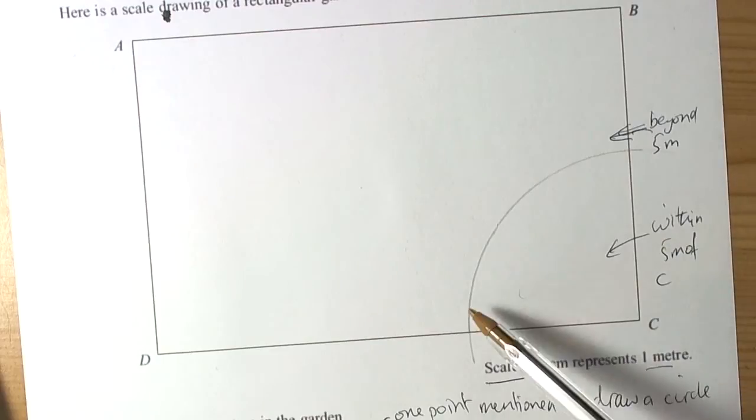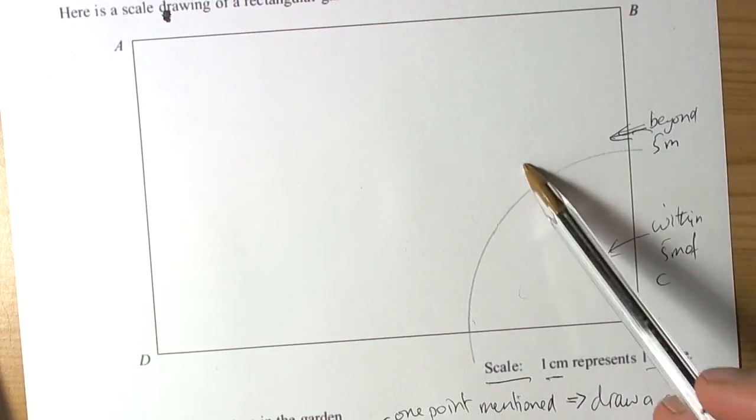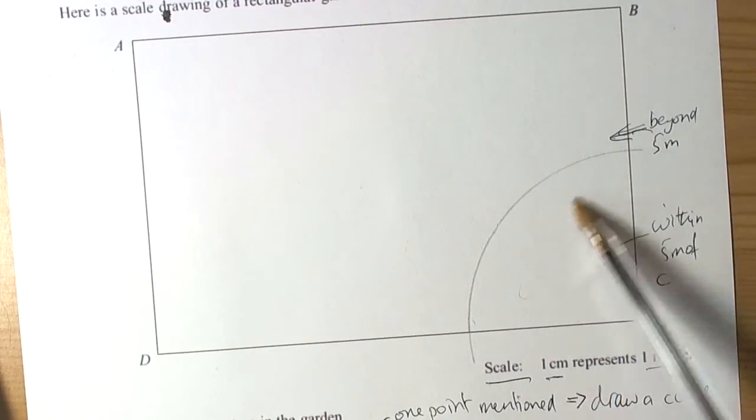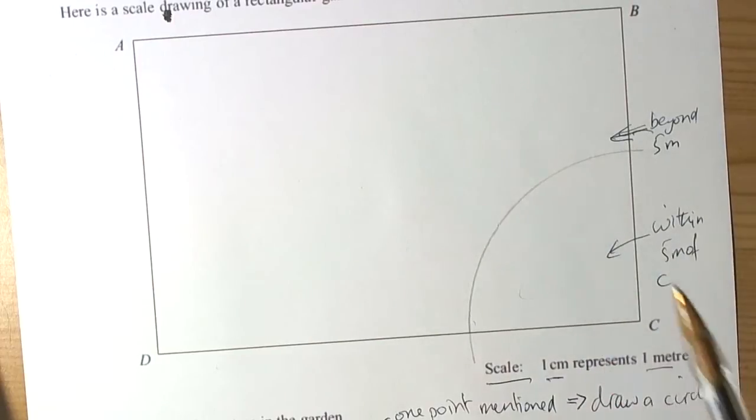That's basically why we're drawing this construction line here. It's going to separate the boundary. Anything in here within five metres, anything out here outside five metres.